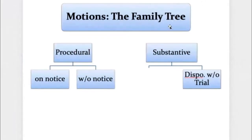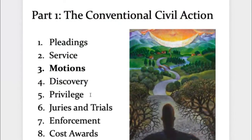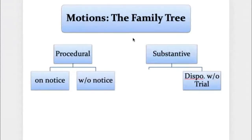One category of substantive motion is disposition without trial — a motion that will end the case. If you win a motion for disposition without trial, you win completely for your client; the case is over, generally considered the best result in civil litigation. We're going to have a whole unit on disposition without trial — section nine of the course will cover all the different forms. Then we have interlocutory substantive motions: an order that affects real-world rights of a party but does not dispose of the matter. Interlocutory means it's for the time being, until the matter can be finally disposed of, typically through trial.